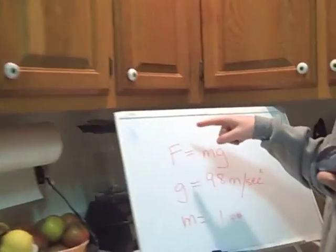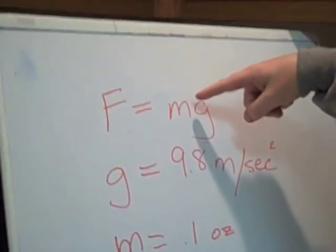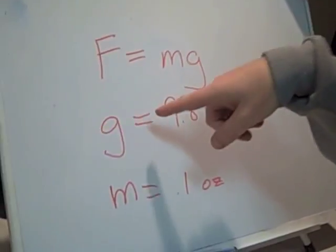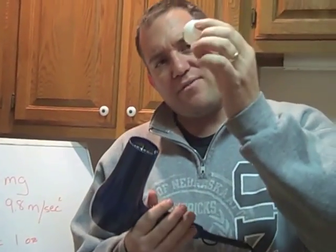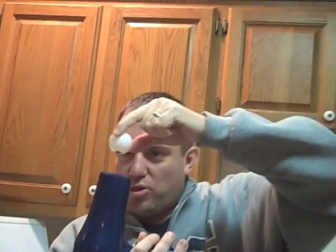Today we're going to use air pressure to calculate the force of gravity. The force of gravity is equal to mass times g, and g equals 9.8 meters per second squared. We're going to put a ping pong ball that weighs 0.1 ounces on here, turn the hairdryer on, and when the force the hairdryer pushes up equals the gravity pushing down, the ball will hover. Somehow we will figure out the force of gravity — I don't know how.